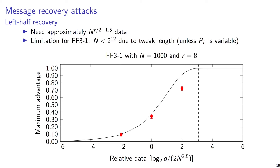This attack requires about N to the power of R/2 minus 1.5 data — the same as the multidimensional linear distinguisher. You can do a more accurate calculation of data complexity, which more or less agrees. However, as shown in this example for FF3-1, as the amount of data approaches the dashed line, there's a discrepancy between the theoretical model and experimental results. This is because the vertical line is essentially the maximum amount of data that can be used due to the short tweak length in FF3-1, which was shortened to fix the previous attack on FF3.